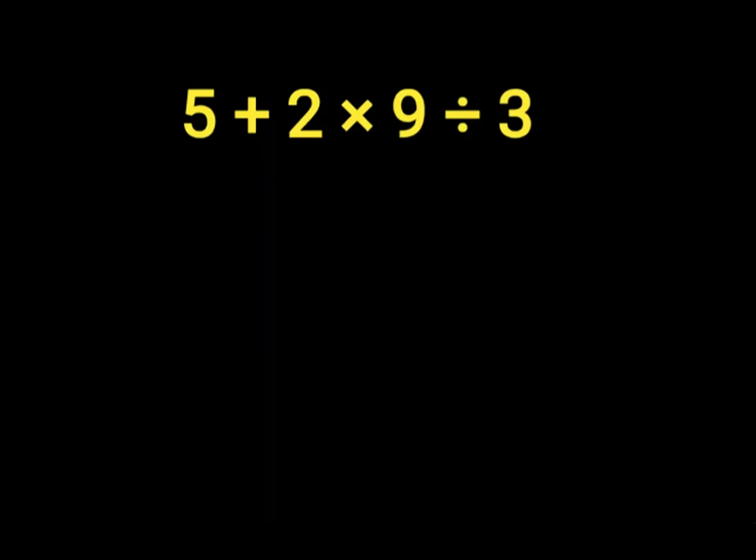5 plus 2 times 9 divided by 3. 5 plus 2 will give us 7. Then we have 7 times 9 divided by 3.